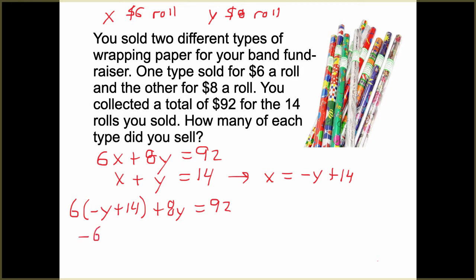We have negative 6Y plus 84 plus 8Y has to equal 92. We're going to subtract 84 from both sides. We are going to combine our like terms. We have negative 6Y and 8Y. So this is 2Y, and it equals $8. Divide by 2, and we get Y is 4.